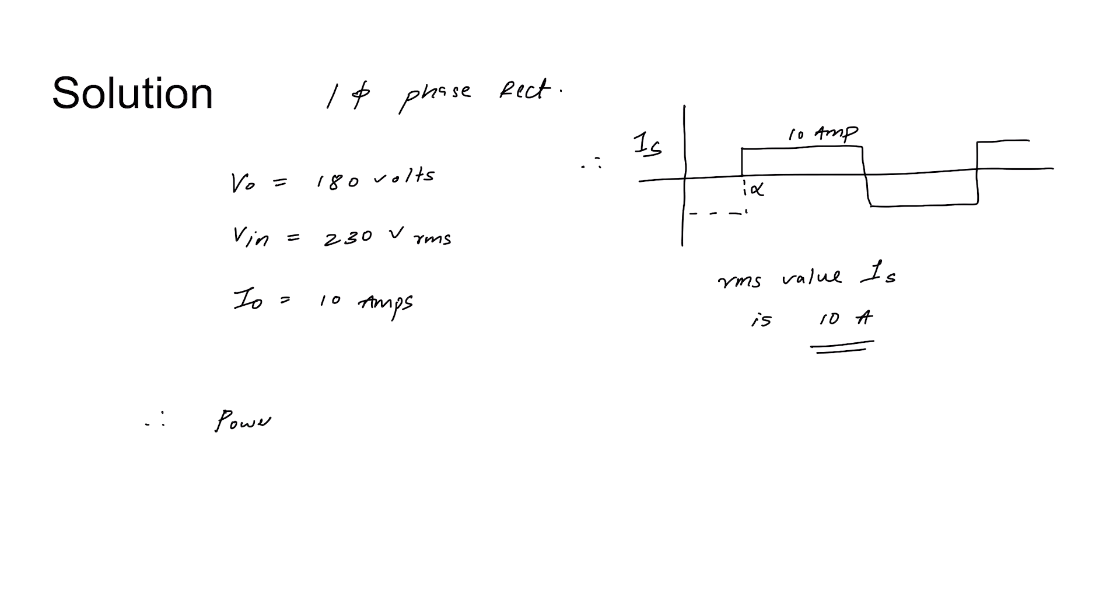As per power balance, P_in is equal to P_out, neglecting losses. Therefore, as real power is only transmitted, V_in_rms * I_in_rms * power factor is equal to V_0 and I_0 both are DC values.